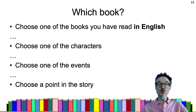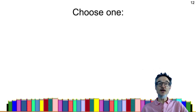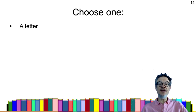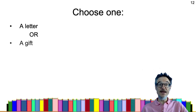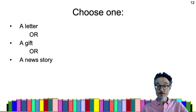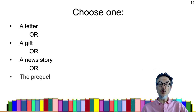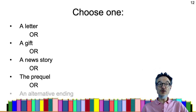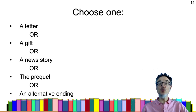When you've chosen your book, you need to choose one of these options: you're going to write a letter, or write about a gift, or write a news story, or write the prequel about what happened before the story, or write an alternative ending. So you need to choose one of these.